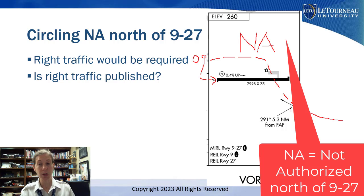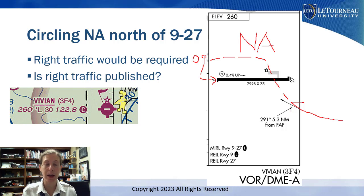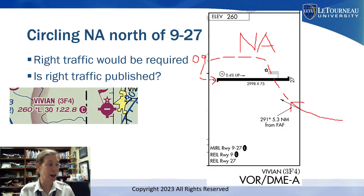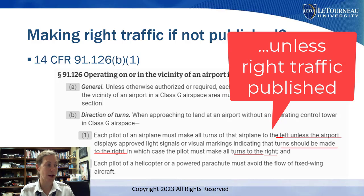Where can I find right traffic information? It's not on the instrument approach chart — kind of a little gotcha that I see people miss. We could look at the VFR sectional chart or the Airport/Facility Directory supplement, but this should be checked in advance. When we pull up Vivian, there's nothing about right traffic for runway 9. So going back to 91.126, we have to make all turns to the left unless right traffic is published — and clearly it's not published at Vivian.